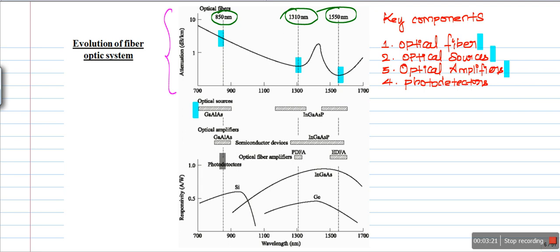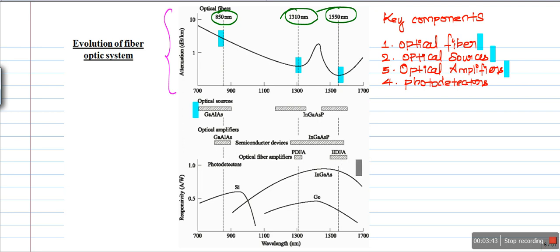Looking at the history of optical amplifiers, the first optical amplifiers used to boost optical signals used gallium aluminum arsenide material. In the 1310 nanometer window, people used a material called praseodymium-doped fiber amplifier. In the 1550 nanometer range, an erbium-doped fiber amplifier was used as a material to boost the optical signal, not an electrical signal.